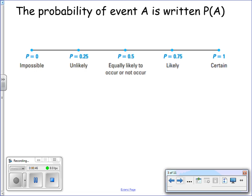I have a nice little timeline here for you. If your probability is equal to 0, that means it's impossible, it will not happen. If your probability is equal to 1, it is certain that it will happen, 100%. If your probability is 0.5, that would be 50%, so it's equally likely to occur or not to occur.